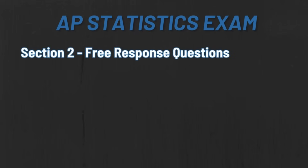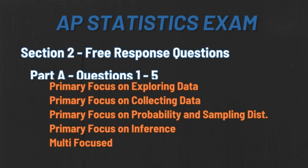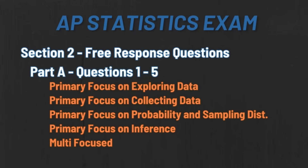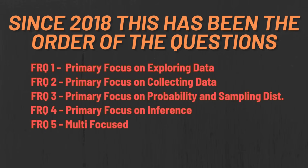Section two is the free response questions, broken down into two parts: Part A and Part B. Part A is questions one through five, each with a primary focus. One will focus on exploring data, two on collecting data, three on probability and sampling distributions, four on inference, and five will be multi-focus, hitting two or more skills. Since 2018, those five questions have gone in that exact order — there's no guarantee of that, but it has happened for the past six years.